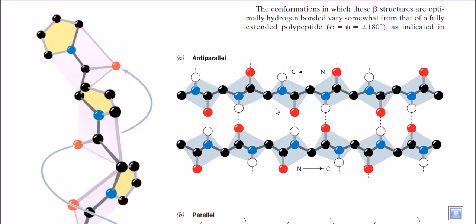Now we are going to talk about another very important secondary structure of a protein: the beta structure, or beta strand formation. Unlike alpha helices, beta strands are simpler because they do not form a helix. The amino acids are in a planar arrangement, and beta sheets — as the name suggests — are placed in a sheet-like arrangement, with layers created one after another.